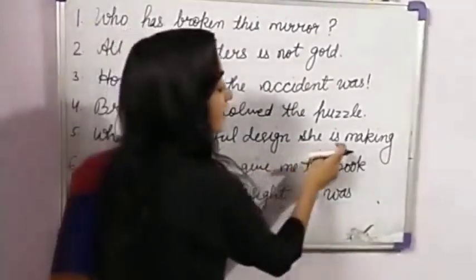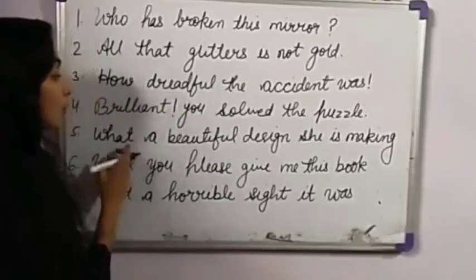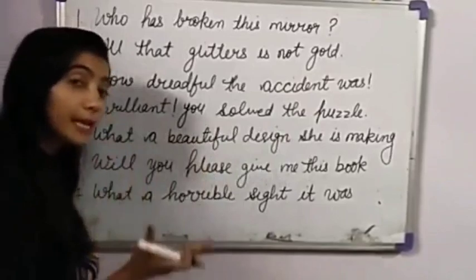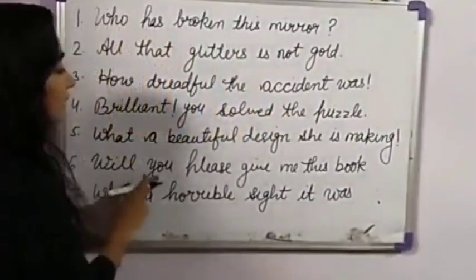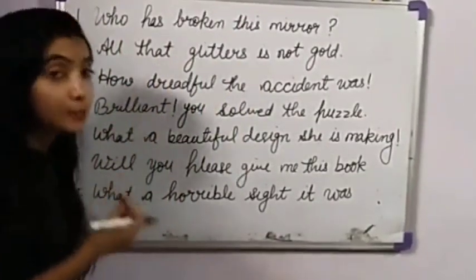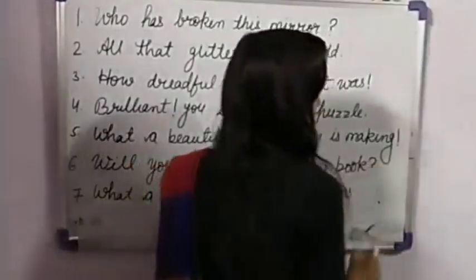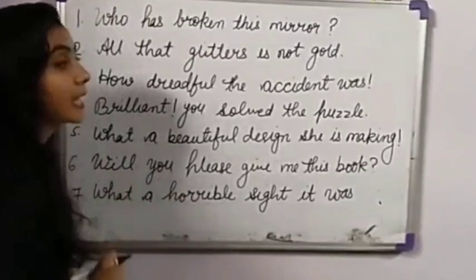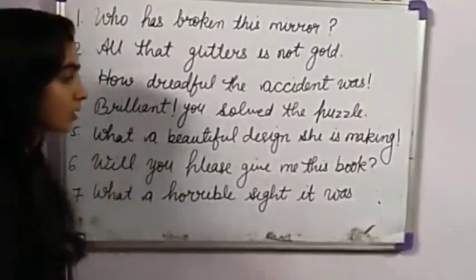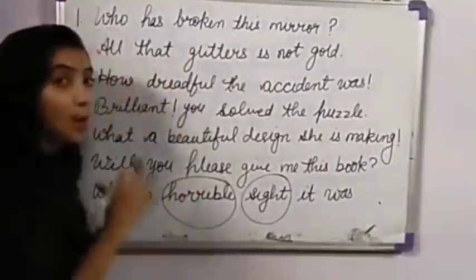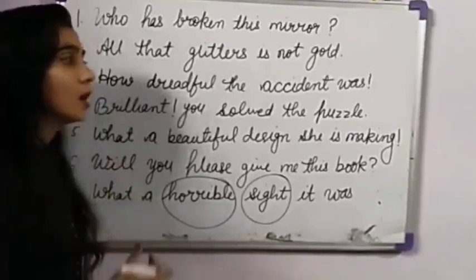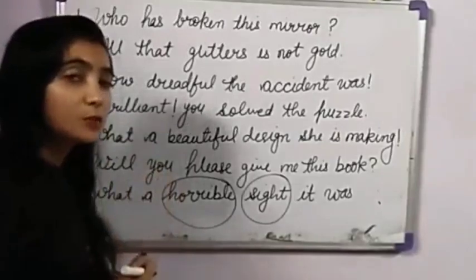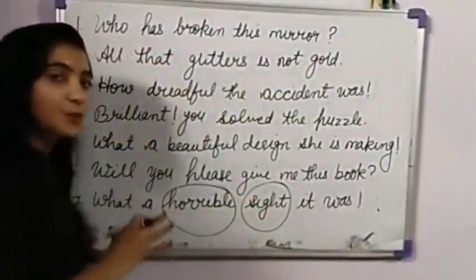'What a beautiful design she is making.' — Yahaan question nahi pucha ja raha hai, yahaan bol ja raha hai woh kitna sundar design bana rahi hai. So it's a strong feeling, we will put here exclamation mark. 'Will you please give me this book?' — Kya tu mujhe yeh book de doge? It's a question, so we will put here question mark. Next is 'What a horrible sight it was' — Kitna daravana drishya tha. It's a strong feeling, so we will put here exclamation mark. Very good, you are very smart.